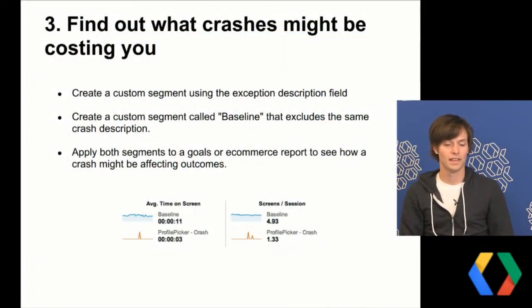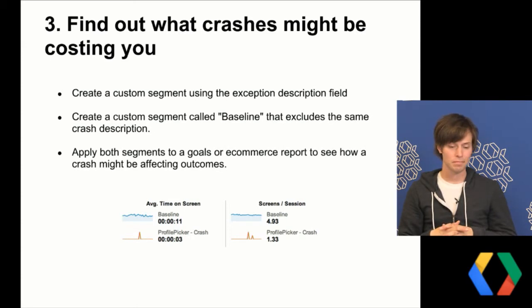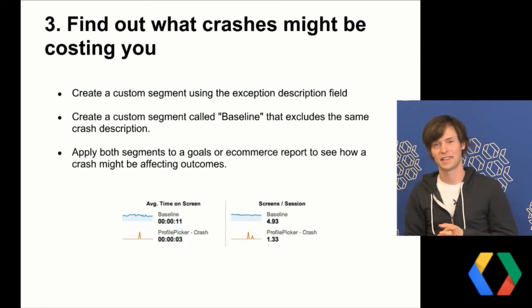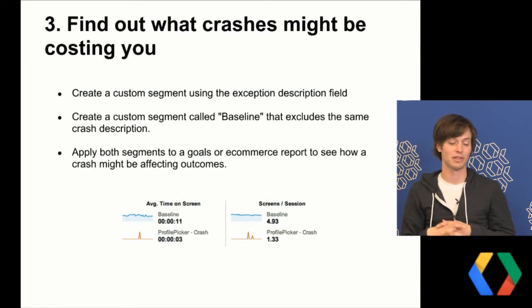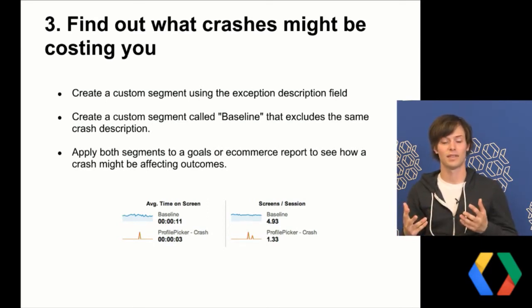You can also use these segments to see the impact on user engagement metrics. In this example, I've got average time on screen and screens per session. The baseline shows 11 seconds average time on screen and about 5 screens per session. But for users who run into this 'profile picker crash,' average time on screen drops to about 3 seconds and screens per session drops to about 1.3. If a user normally gets 5 screens deep but this crash is causing sessions to be just one screen, that's a serious problem you'll want to prioritize resolving.